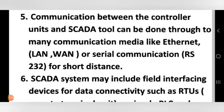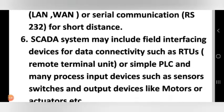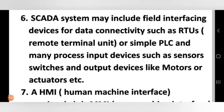The sixth point: the SCADA system may include field interfacing devices for data connectivity, such as RTUs (Remote Terminal Units) or simple PLCs, along with many process input devices like sensors and switches, and output devices like motors and actuators.